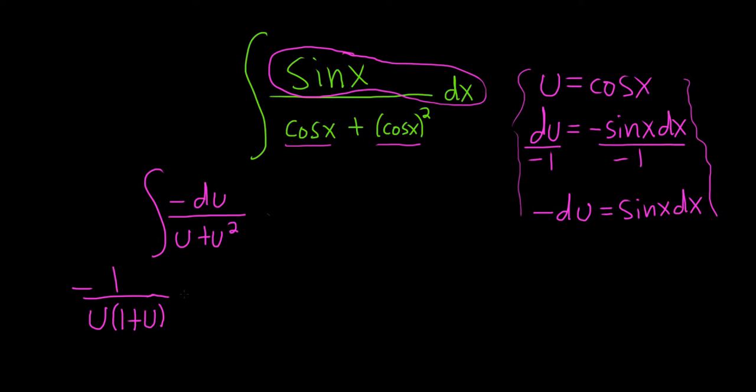So because we have distinct linear factors, partial fraction says that we just write a constant above each factor. So it's a over u plus, and then b over 1 plus u.